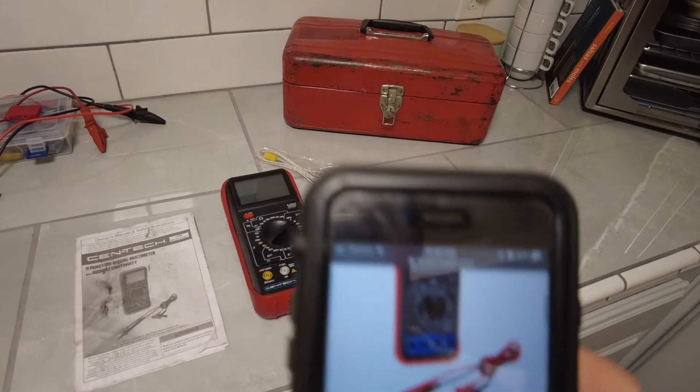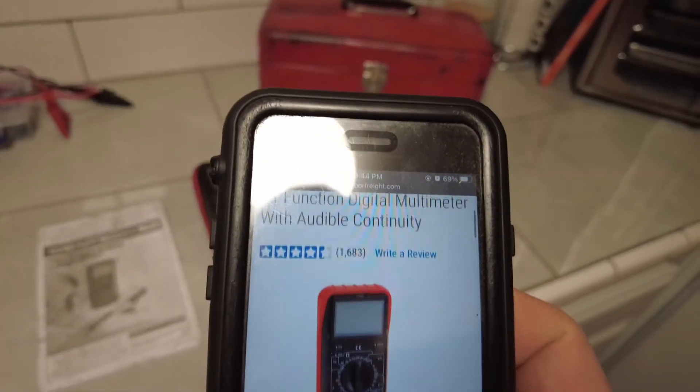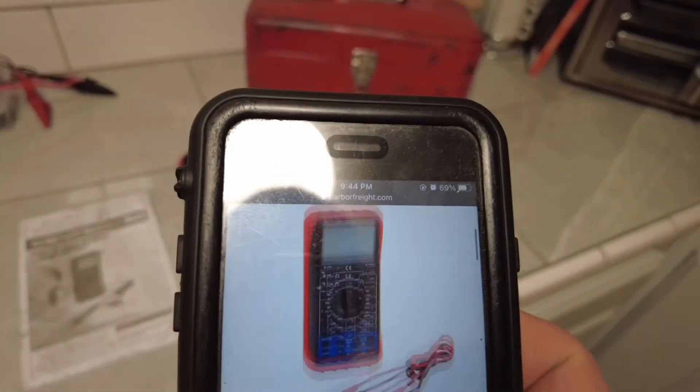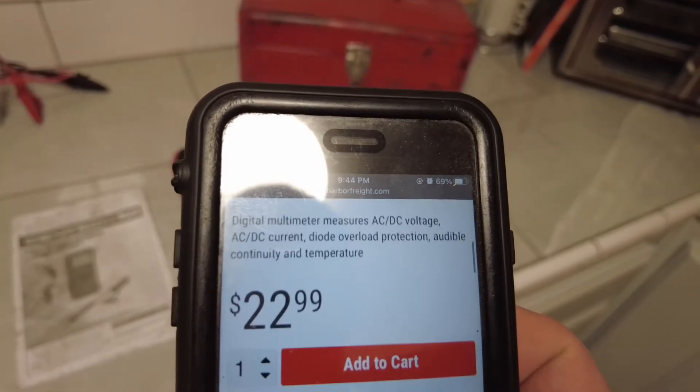Okay, so today I'm going to do a review of the Harbor Freight 11 function digital multimeter. Let's dive right into it. This is the multimeter right here, and it runs about $22.99 if you get it not on sale.